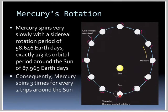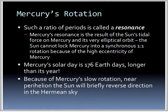If a hill were pointing towards the Sun, two-thirds of the way around it would be pointing in the same direction with respect to the background stars. When it comes back to the same position, it points in the opposite direction. Such a ratio of periods is called a resonance. Mercury's resonance results from the Sun's tidal force on its very elliptical orbit — the Sun cannot lock Mercury into a synchronous one-to-one rotation because of Mercury's high eccentricity. Because of this, Mercury's solar day is 176 Earth days long — its day is longer than its year of 88 days.